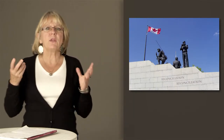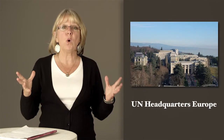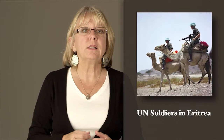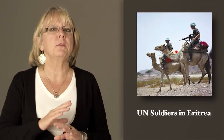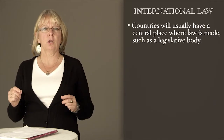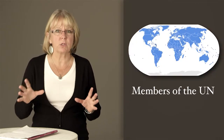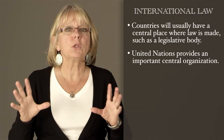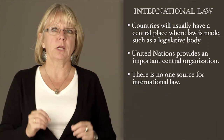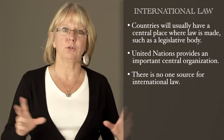So now that we have an idea of what law and legal systems are, what is international law? How is international law any different? International law is distinctive in many ways. First of all, countries usually have a central place where law is made, such as a legislative body. In international law, however, there's no central place where international law is made or enforced. There's no chief parliament. However, the United Nations is an important central organization. And there is also no one source for international law — there's no single place to look for what it is.